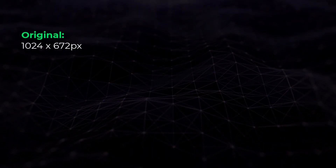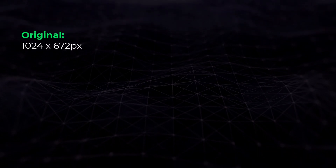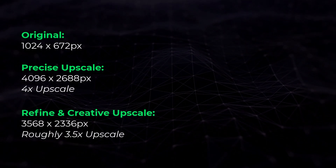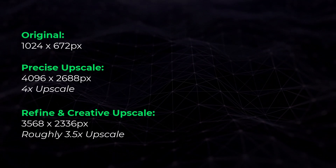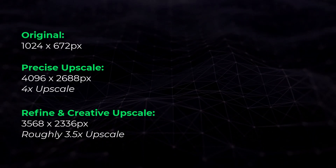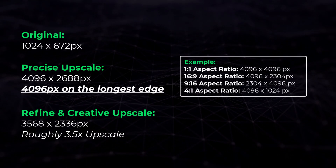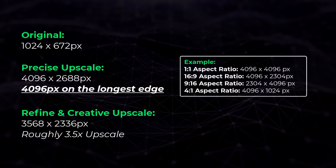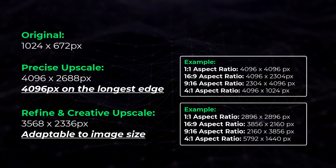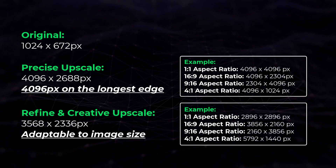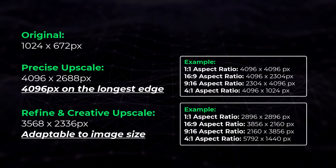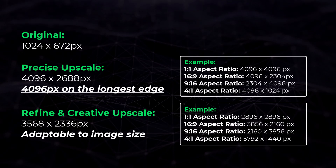So how do these upscalers actually compare? The original image is 1024 by 672. The precise upscale basically gives us a 4x upscale bringing it up to around 4000 pixels, while refined and creative do a little bit less at around 3.5x. However, these upscalers don't multiply by exact multiples — they produce an image up to a certain resolution on the longest edge. The precise upscale takes your images up to 4096 on the longest edge regardless of aspect ratio, whereas refined and creative upscales are more adaptive depending on the aspect ratio to try and get a similar sized image in total pixels. In more extreme aspect ratios like 4 to 1 you can start to get a higher resolution on refined and creative simply because of that adaptive nature.